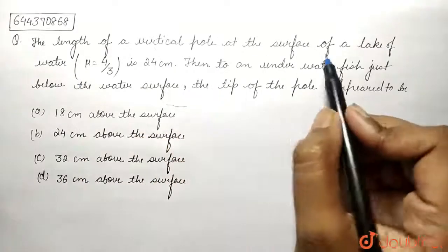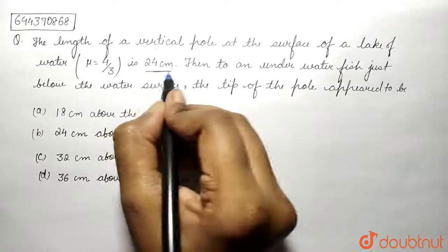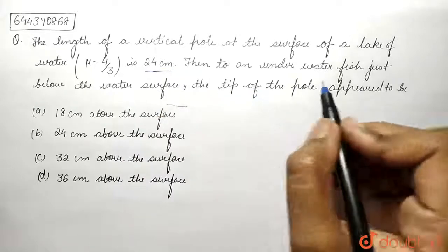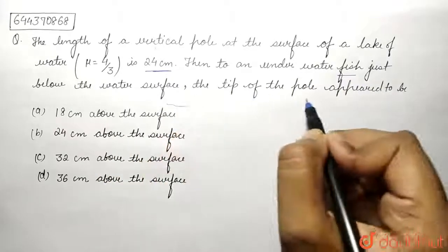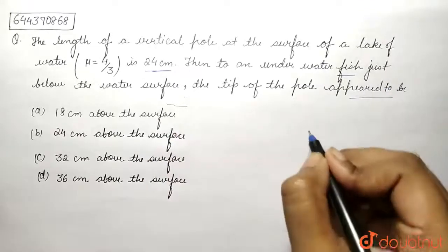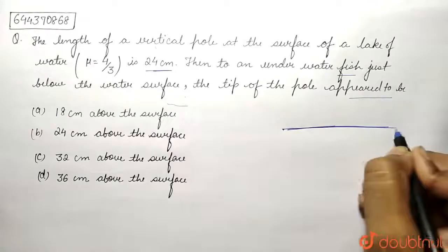length of a vertical pole at the surface of a lake of water is 24 centimeter. Then to an underwater fish just below the water surface, the tip of the pole appeared to be. So let this to be the lake.